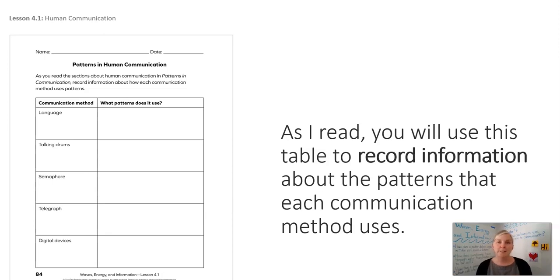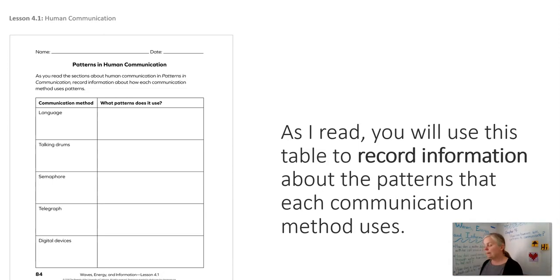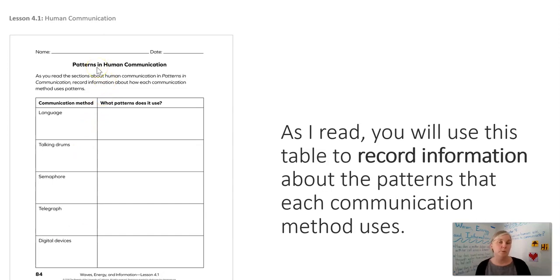Today, you are going to need page 84 in your science notebook or your district packet. You can just use a piece of paper or a notebook if you have it — it doesn't necessarily matter because the whole goal is for you to be listening, visualizing, and jotting a note. You can see on page 84 that we're looking at patterns in human communication, and there's a variety of communication methods noted in the left column. The right column is for us to think about what patterns each of these use.